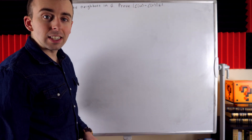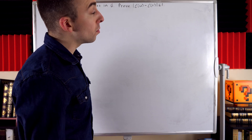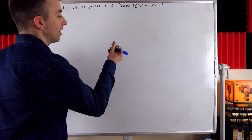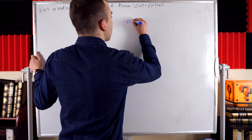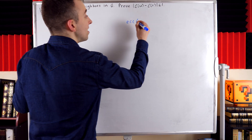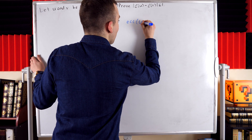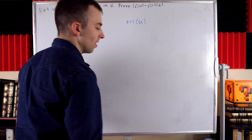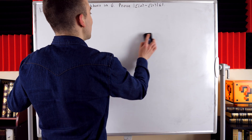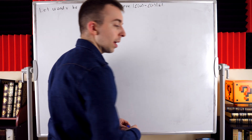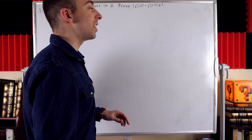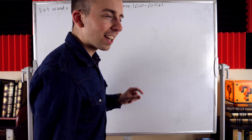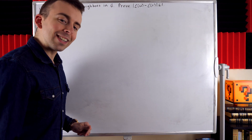The eccentricity notation we're using here is epsilon of the vertex to indicate its eccentricity. Another common notation is ECC of the vertex to denote its eccentricity, but we're going to use this epsilon notation, which will be kind of weird for those of you who've been watching my real analysis videos, but I'm feeling risky tonight, so that's what we're going to do.